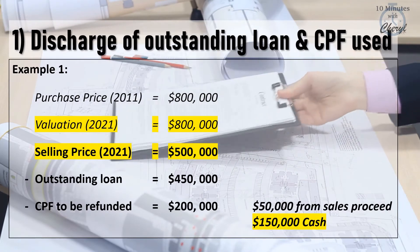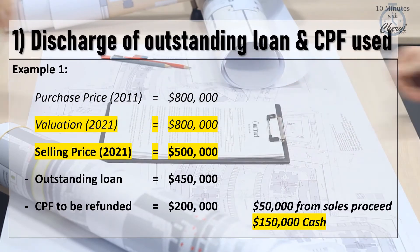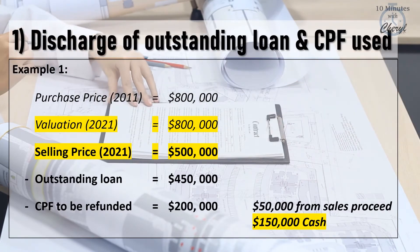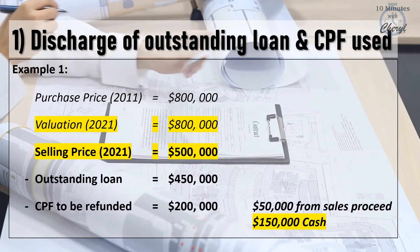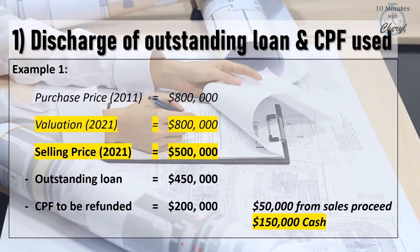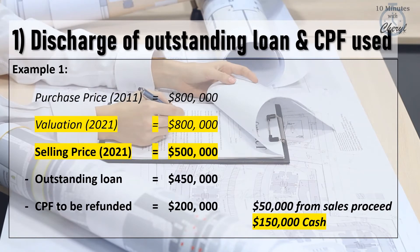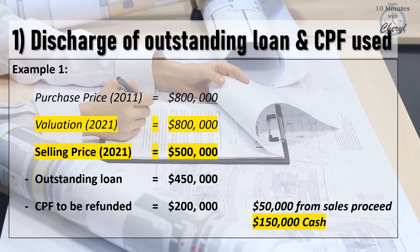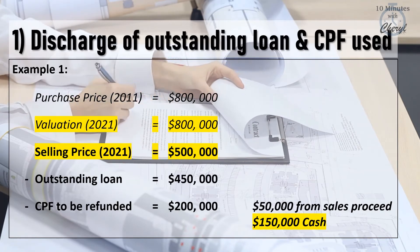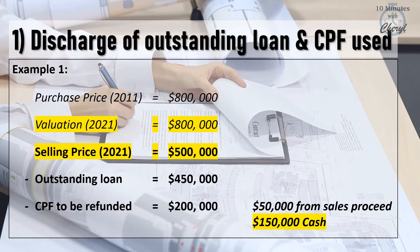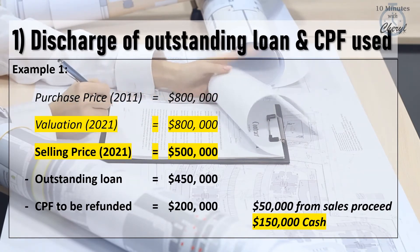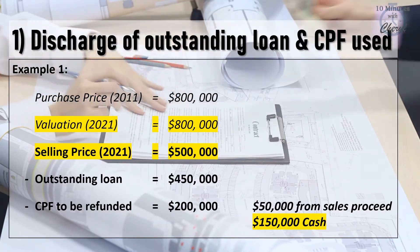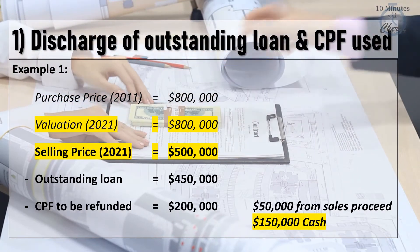If a seller sells below valuation, and the sales proceeds are insufficient to discharge the bank loan or the amount of CPF funds he had utilised from his own CPF, the sellers will need to pay this shortfall in cash.